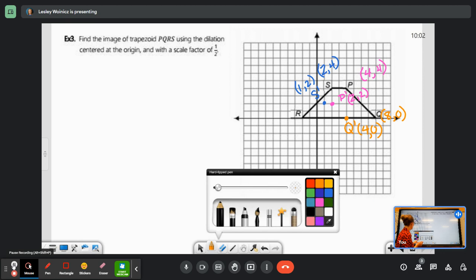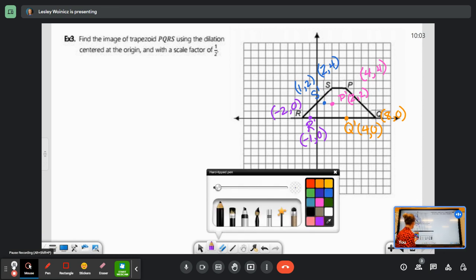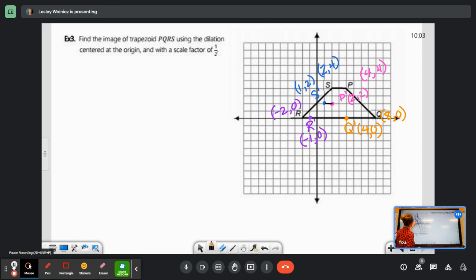And R is at negative 2, 0. So if I split that distance to the origin, my R prime will be here at negative 1, 0. And there's my little tiny trapezoid.